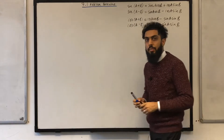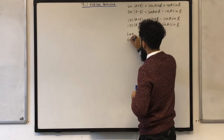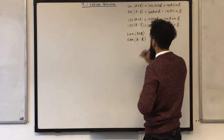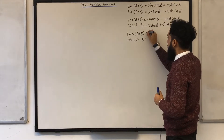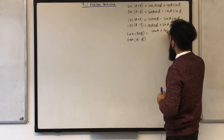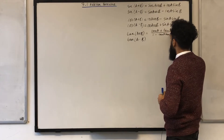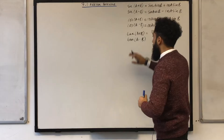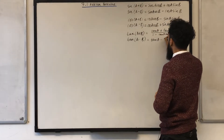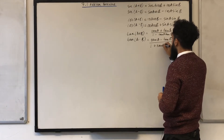Let's have a look at the addition formulae for tan now. We could have A plus B in the bracket or A minus B. The first one: tan(A plus B) is equal to tan A plus tan B all over 1 minus tan A tan B. The second one: tan(A minus B) is equivalent to tan A minus tan B all over 1 plus tan A tan B.